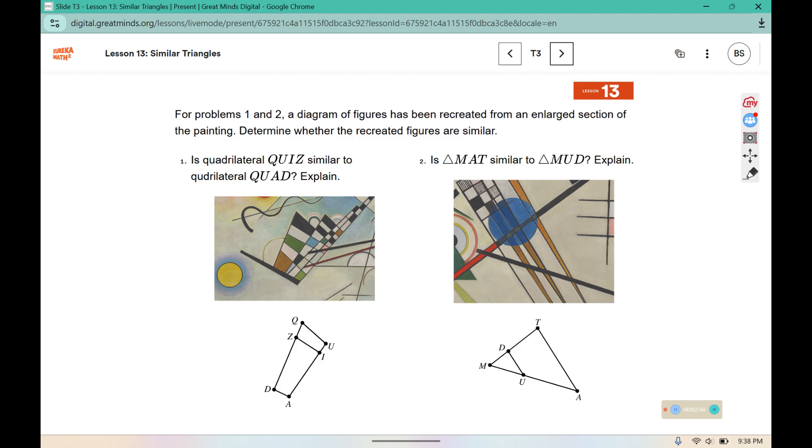For Problems 1 and 2, a diagram of figures has been recreated from an enlarged section of the painting. So they've kind of zoomed in to a part of the painting. And you are going to determine whether the recreated figures are similar. So you can see here they've drawn this shape. It says is quadrilateral QUIZ similar to QUAD? And explain.